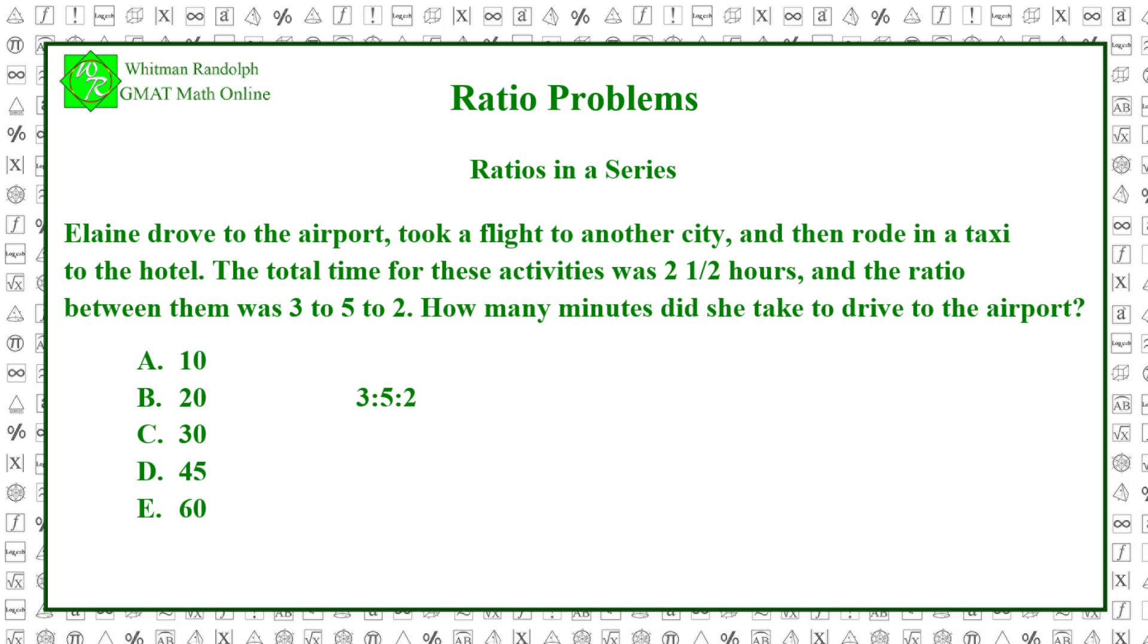If the total time was 2 and a half hours, then the total time was 150 minutes. 1 tenth of 150 equals 15 minutes. Since the first part was 3 tenths of the trip, then the first part took 3 times 15, which equals 45 minutes. So, the correct answer is D.